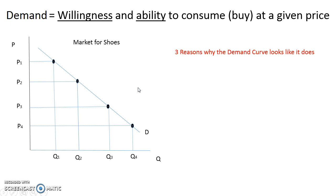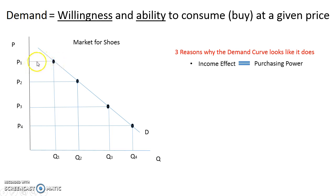There are three reasons why the demand curve looks like it does. The first one is the income effect. When I think of income effect, I think of purchasing power. As the price is higher, it's taking up a higher portion of my income, and so the quantity I'm going to demand is less. But as you lower the price, it's taking up less of my purchasing power, and so the quantity demanded will increase.